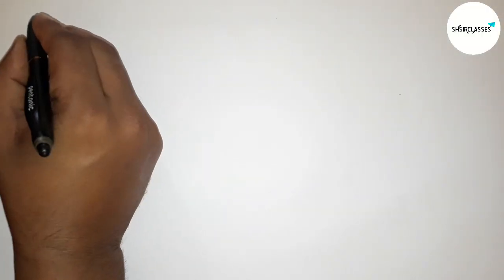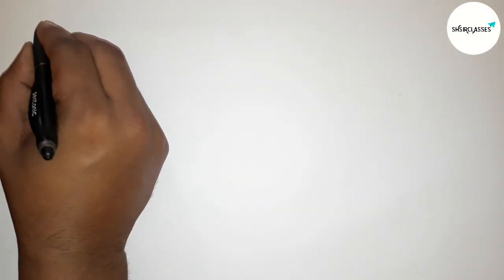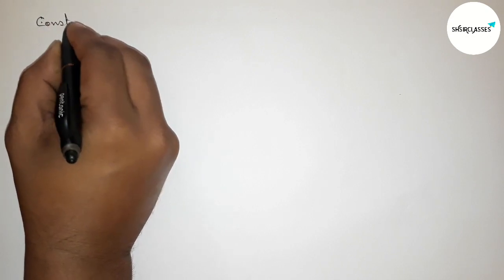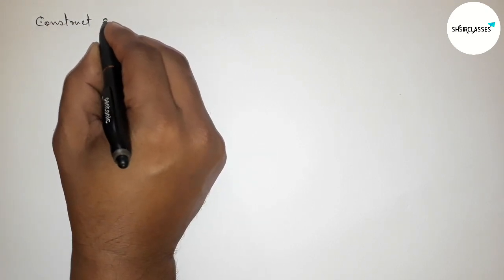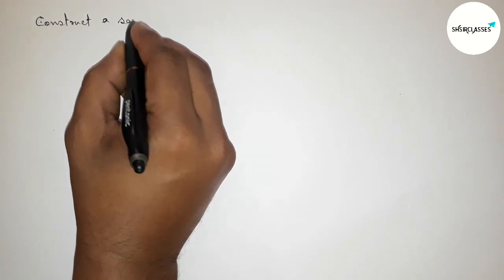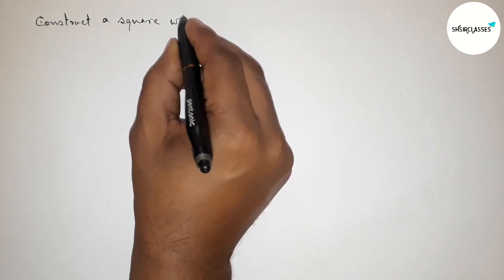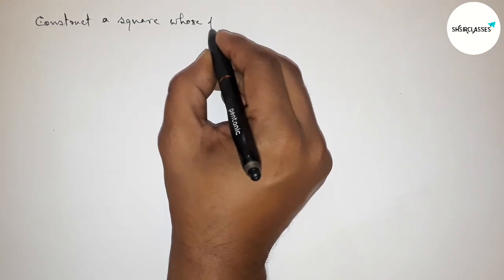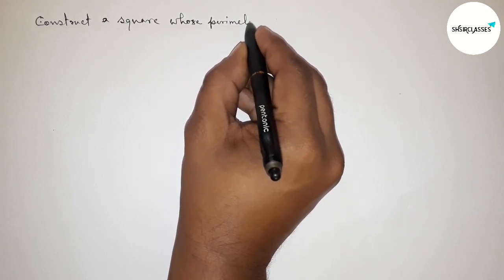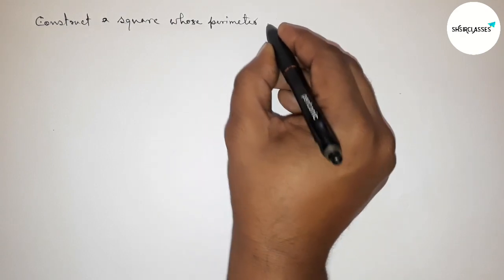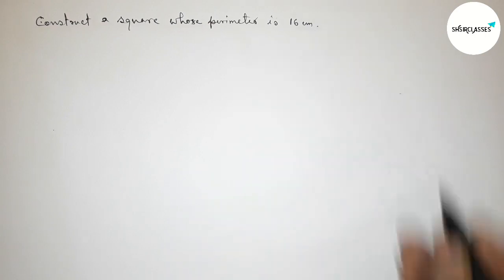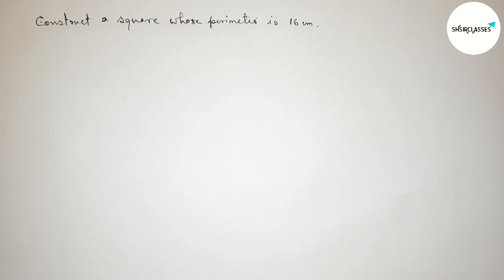Hi everyone, welcome to SI Share Classes. Today in this video we have to construct a square whose perimeter equals 16 centimeters. Please watch the video till the end. Let's start the video.